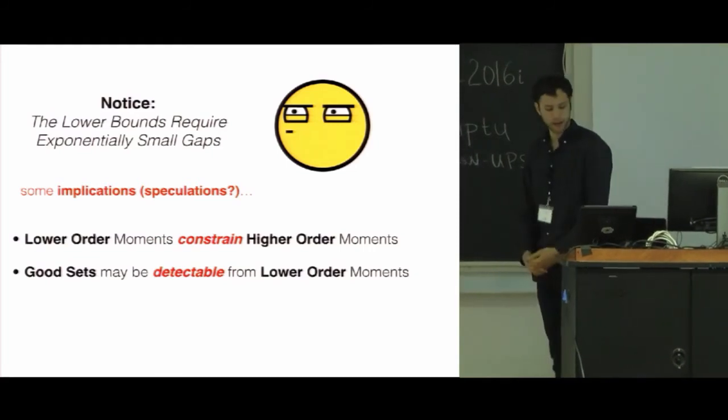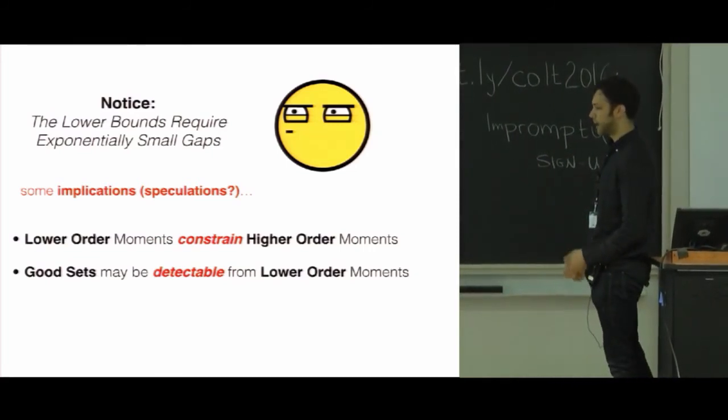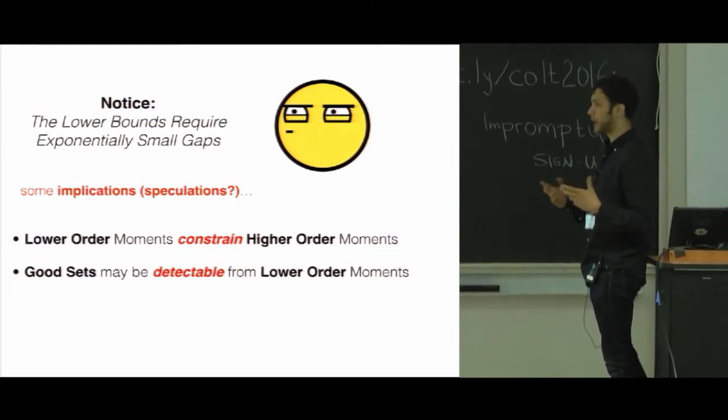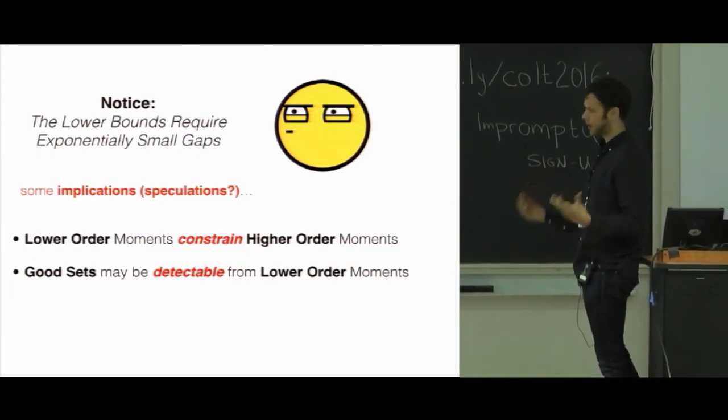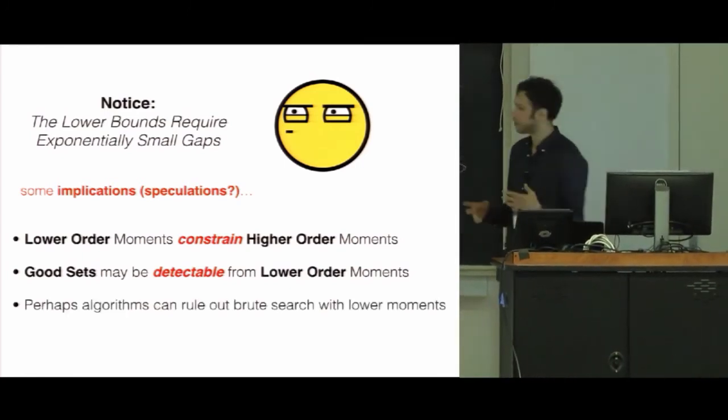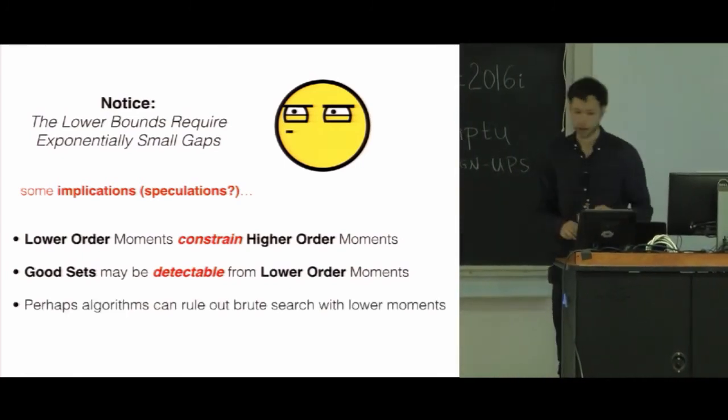Said another way, good sets might be detectable from lower order moments. So you might find that if you have a lot of ice cream flavors that are immensely popular, they might be, in favorable instances, likely to be in the top set. And so you can use an optimistic algorithm which could rule out brute force search by appealing to lower order moments.